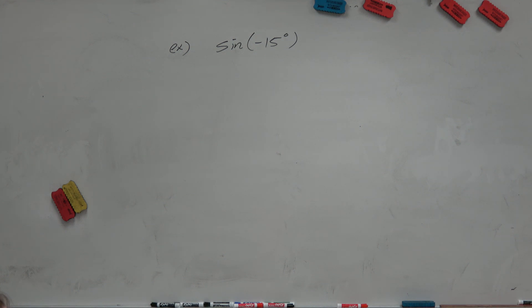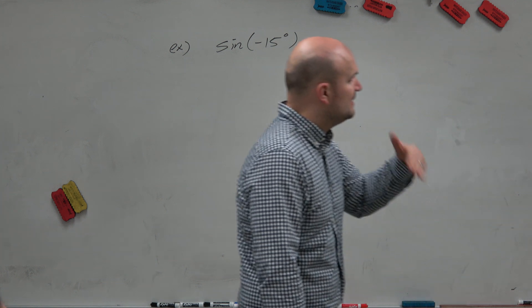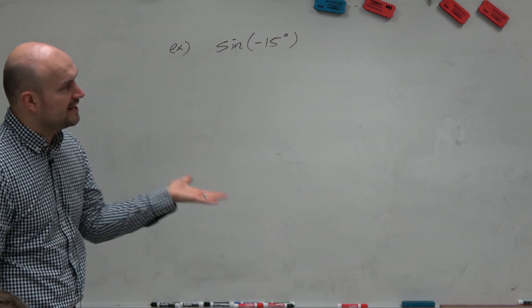So again, as we discussed, there's many different ways. We could do 45 minus 60, 30 minus 45, negative 60 plus 45, negative 45 plus 30.